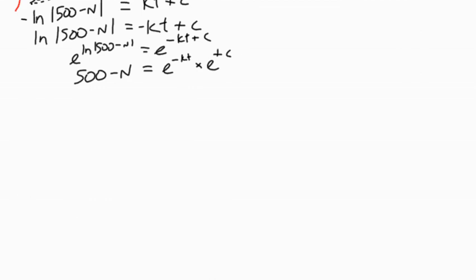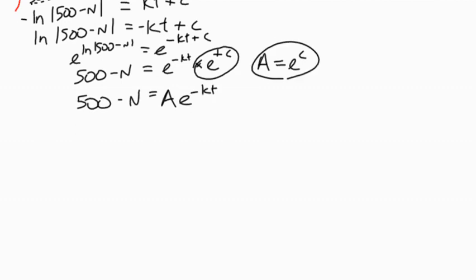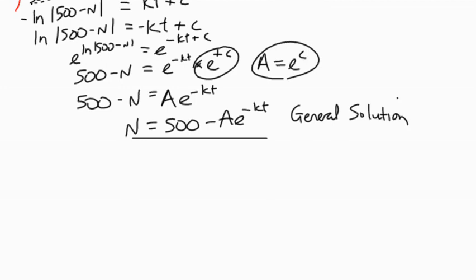What we do with this is that we're now multiplying by a constant, so we introduce a common capital letter A. So 500 minus n equals A times e to the negative kt, where A is this constant value e to the c. We've changed our constant from being a value adding on to the function to being a multiplier. We're nearly there in terms of a function in terms of n. We just rearrange it and we get n equals 500 minus A e to the negative kt. And that's our general solution.